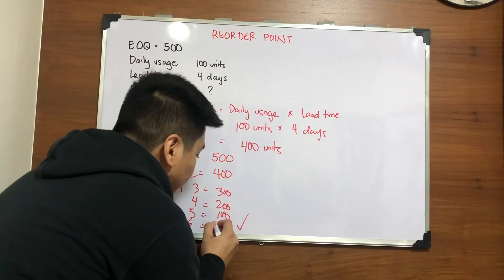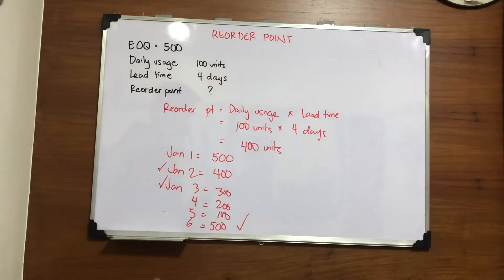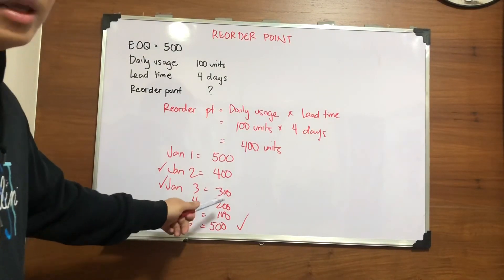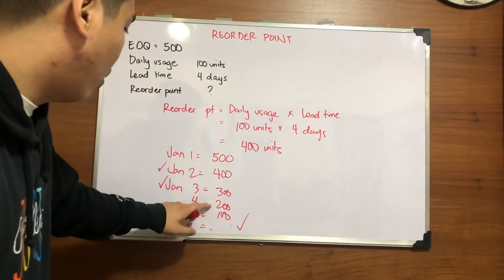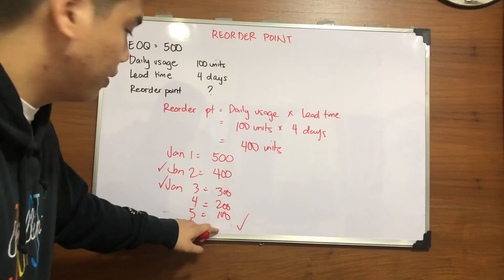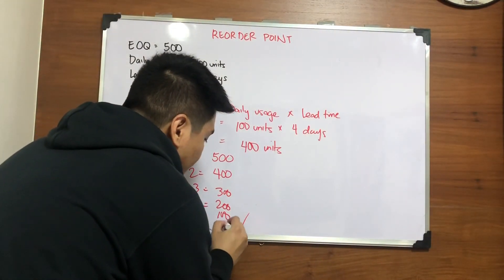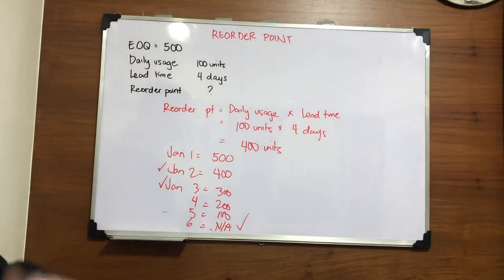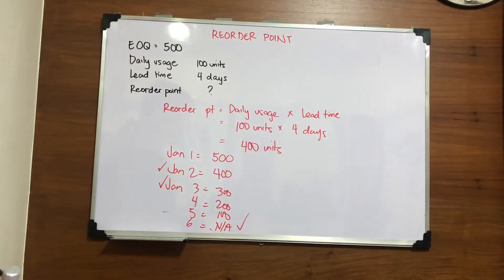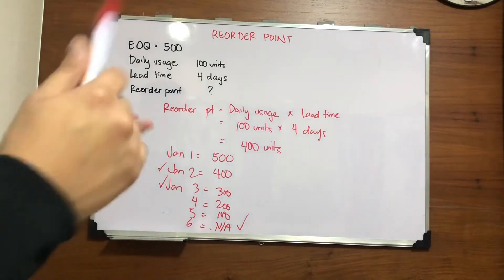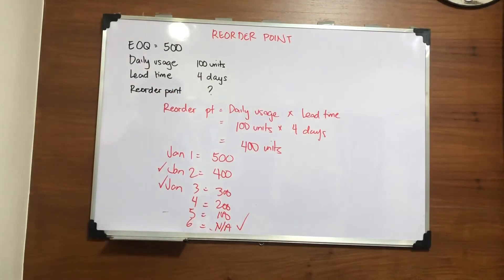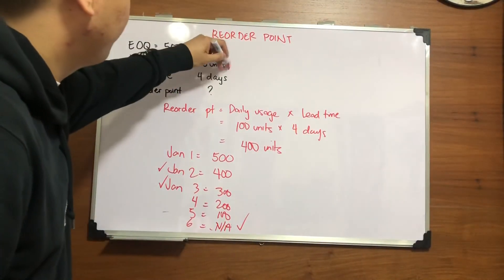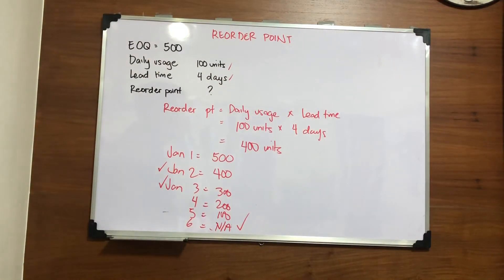You would receive your order on January 6 and have 500 units again. But if you're late and call on January 3 instead of January 2, counting 4 days forward means you would have a stock-out — no available inventory — and your production would be disrupted and no sales would be generated. So that's the trigger of the EOQ. After determining EOQ, you can determine your order point using two factors: your daily usage and your lead time.